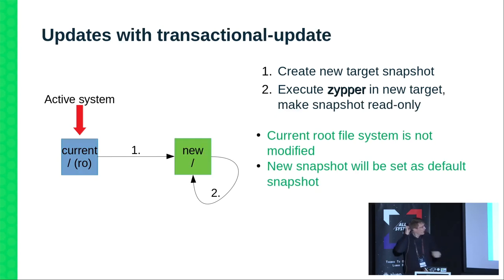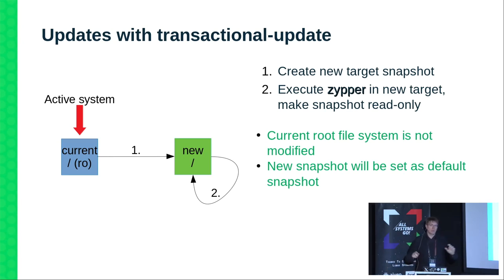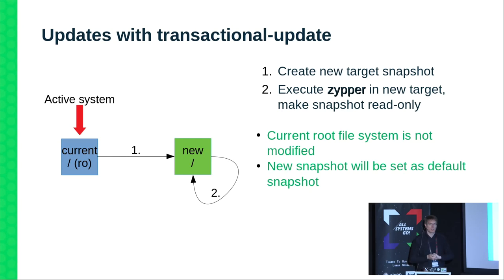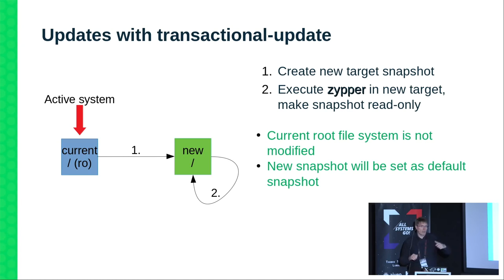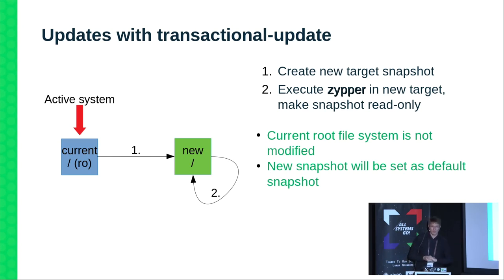If anything goes wrong, that new snapshot will just be deleted in the background again and the system will just stay where it is — everything is fine. That's the basic concept. If the update is successful, the default BTRFS snapshot will be set to that new snapshot, so whenever your system reboots, it will reboot into that new snapshot and use the updated system. That reboot part is one of the basic elements of atomic systems, because you can't guarantee atomicity in a live running system.